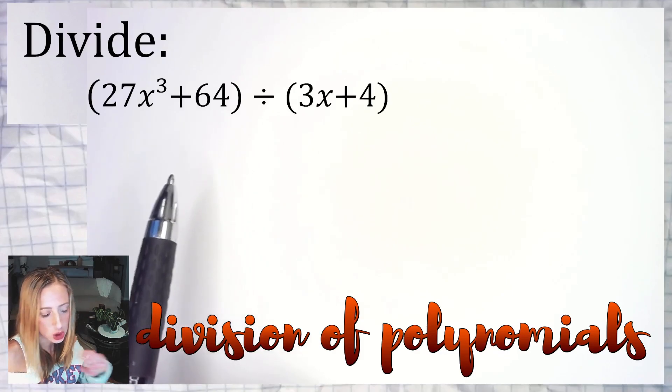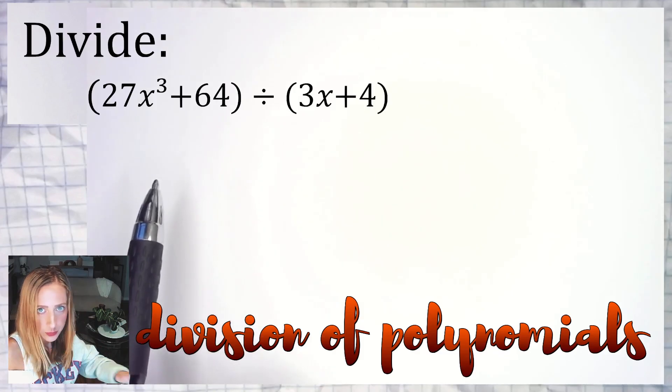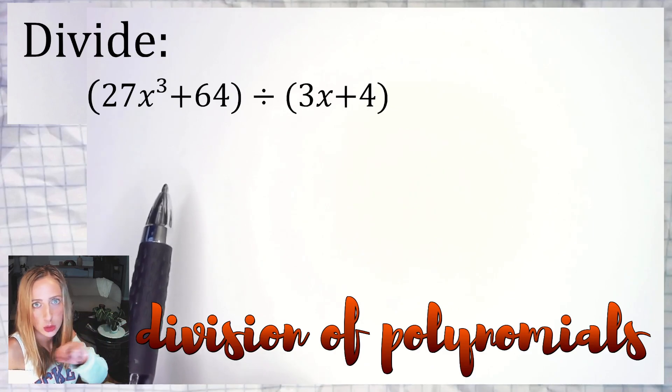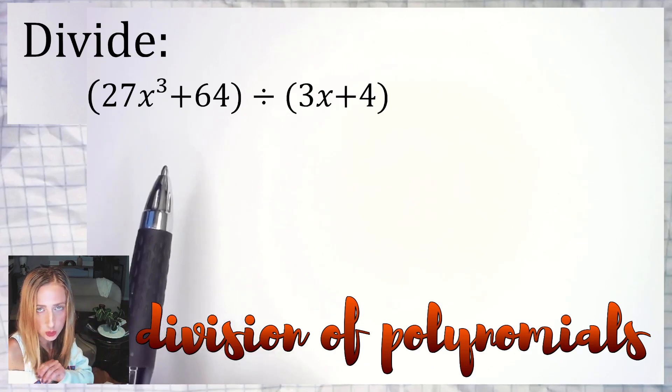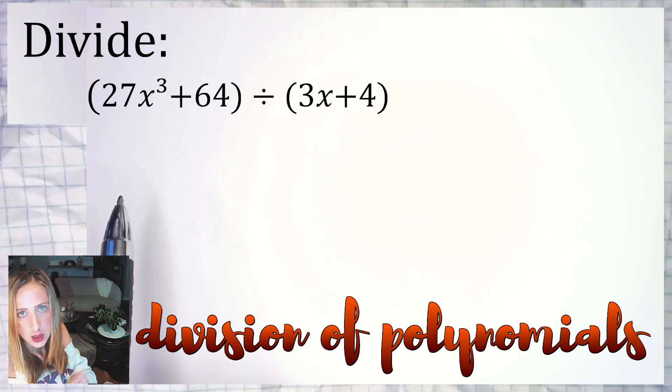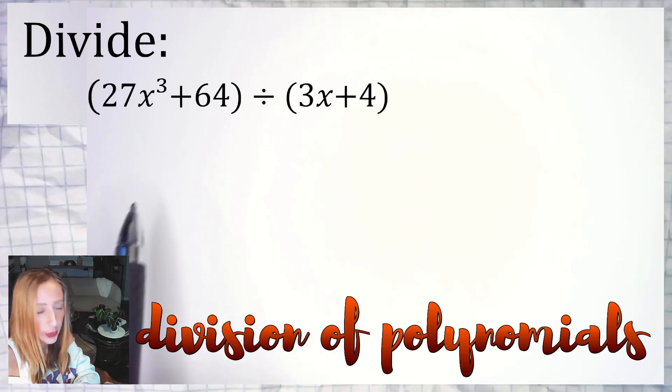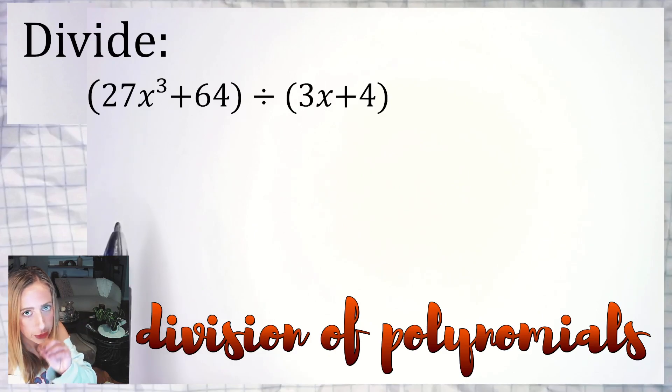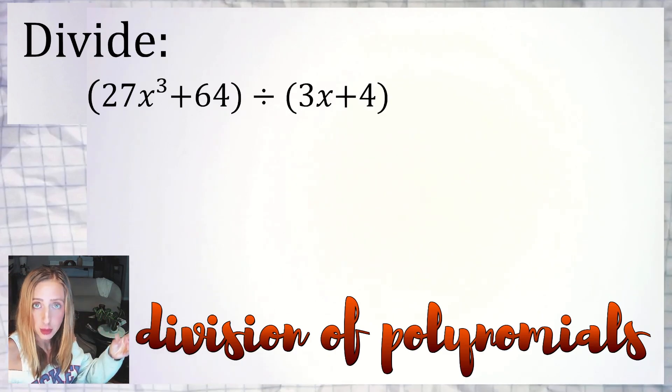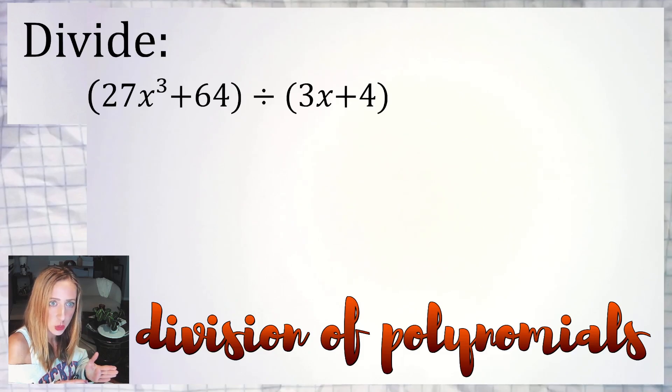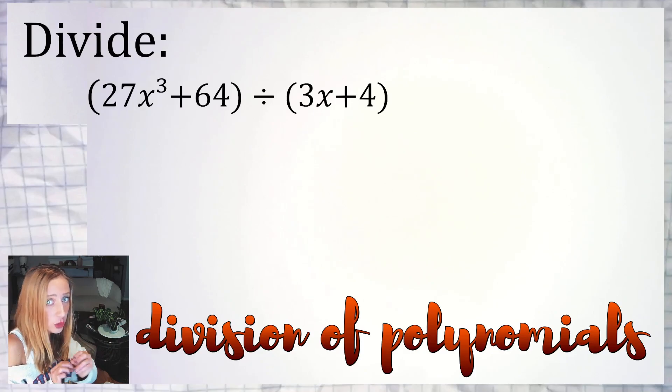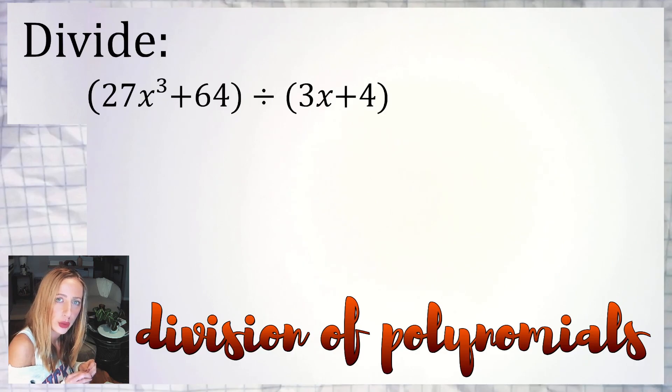So long division is the go-to. It will work, it's reliable. You just need to remember your placeholders and watch when you're subtracting. This particular example would also work if you considered it as simplifying a rational expression where the 27x³ + 64 is the numerator and the 3x + 4 is your denominator and you know how to factor the numerator.